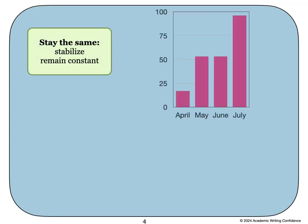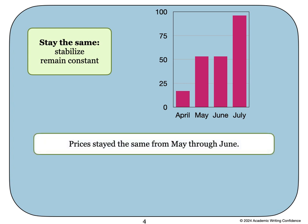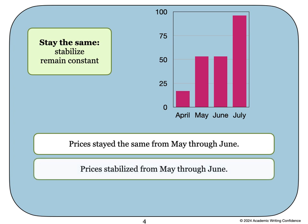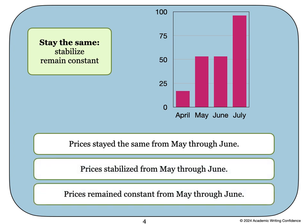Here are some example sentences for when information stays the same. Prices stayed the same for May through June. Prices stabilized from May through June. Or prices remained constant from May through June.